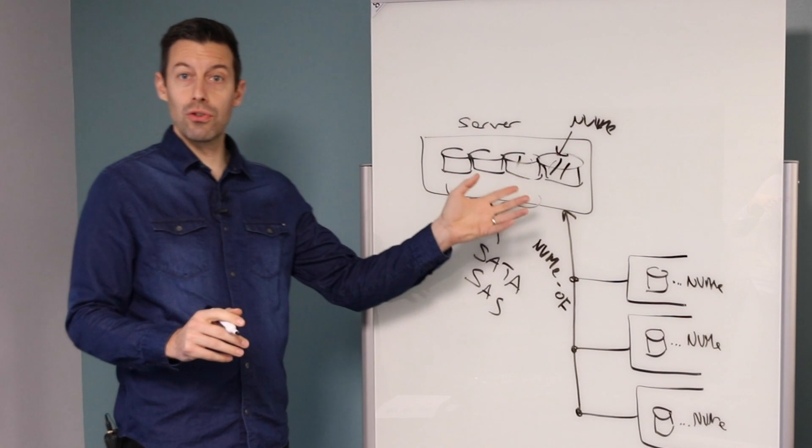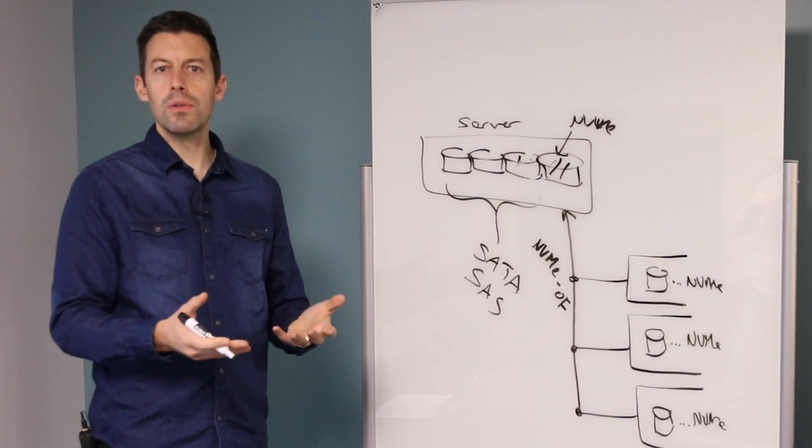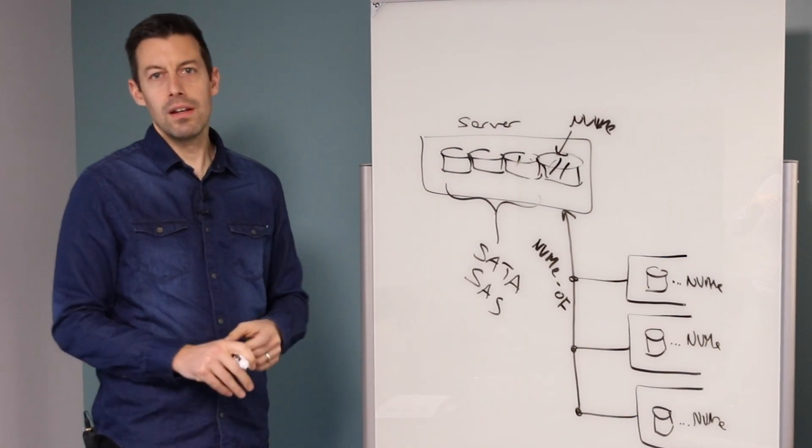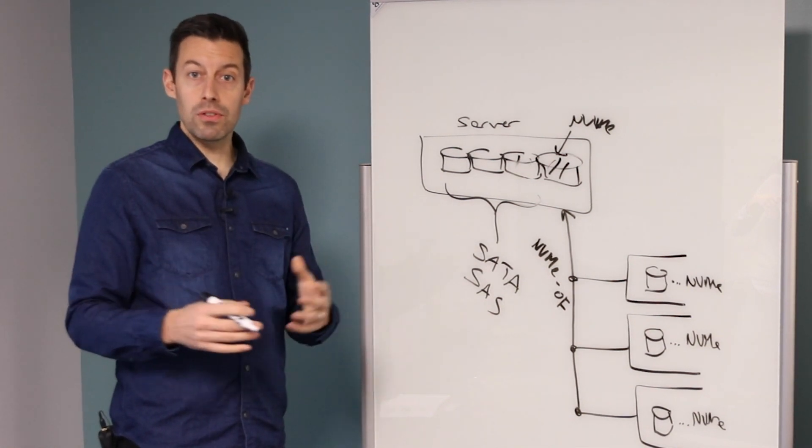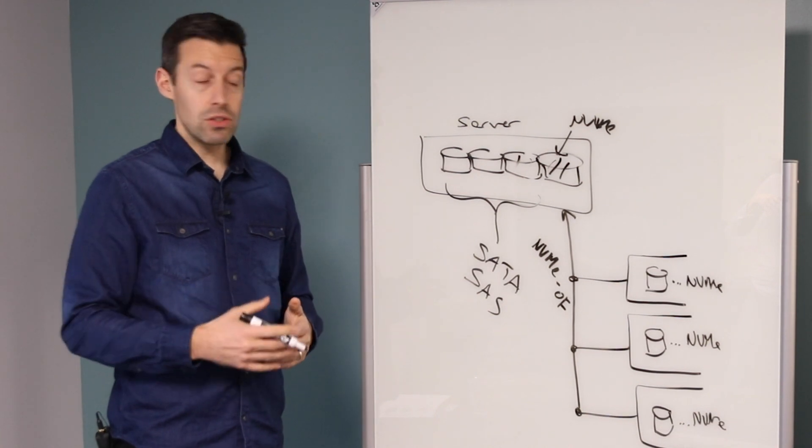Now PCIe worked great, but you were limited how many drives you could put in a single chassis. Even if you were using external PCIe, there was only a few feet that you could run that. So to enable you to expand those networks a little bit further, we put NVMe over Fabrics. So enabling it to run on the network.